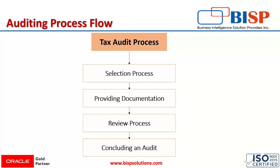There are certain steps followed in the auditing process. First is the selection process, wherein the IRS will contact a taxpayer who has been selected for audit by email. Then comes the next step — providing documentation — where the IRS may request receipts, invoices, bank statements, or any cancelled checks that are there.